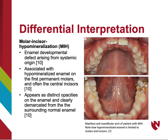Molar incisor hypomineralization is an enamel developmental defect arising from systemic origin. It is associated with hypomineralized enamel on first permanent molars and often the central incisors. It appears as distinct opacities on the enamel, clearly demarcated from the surrounding normal enamel. To differentiate MIH from AI, it is important to note that MIH is limited to just the permanent molars and incisors, while AI can affect all the teeth in the mouth, primary or permanent.